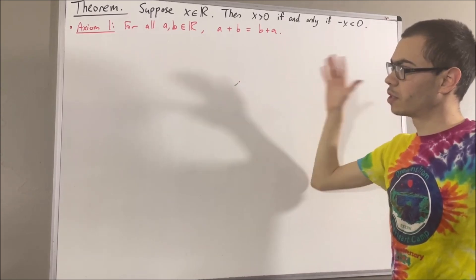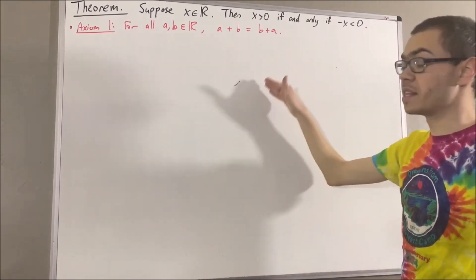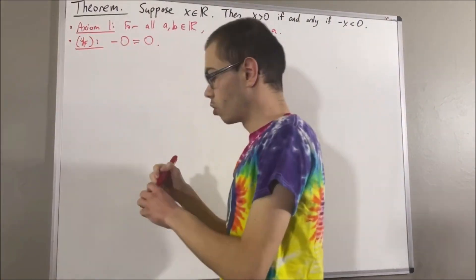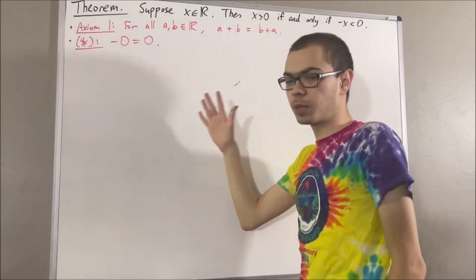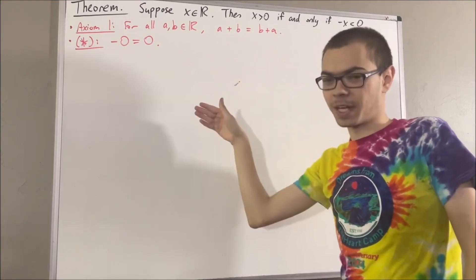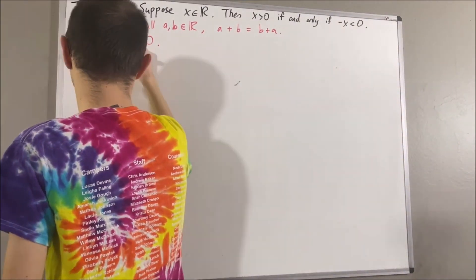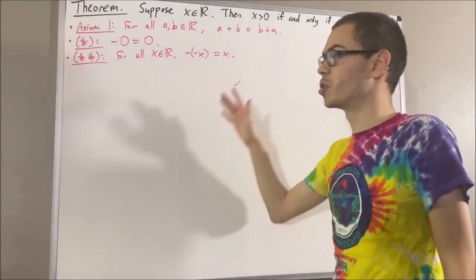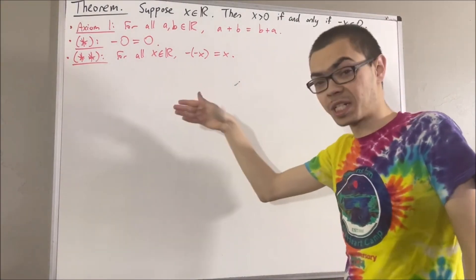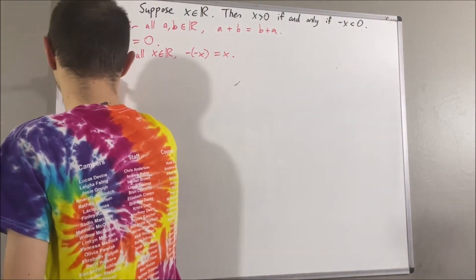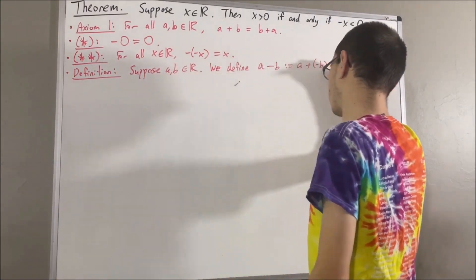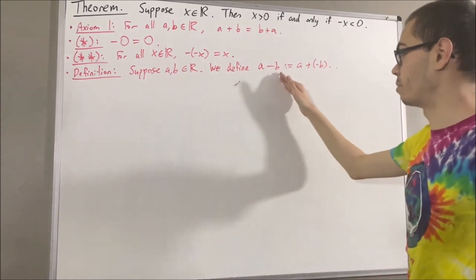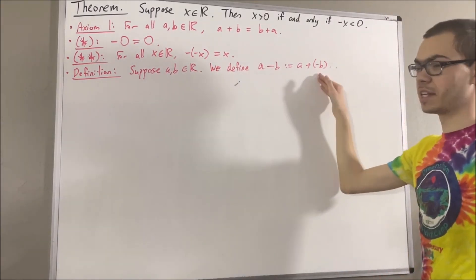Now, we have proven at this point that the negative of zero is equal to zero. We've also proven for every real number x, the negative of negative x is equal to x. We also use the concept of the negative of a real number to define subtraction: suppose a and b are real numbers, we define a minus b to be a plus the negative of b.